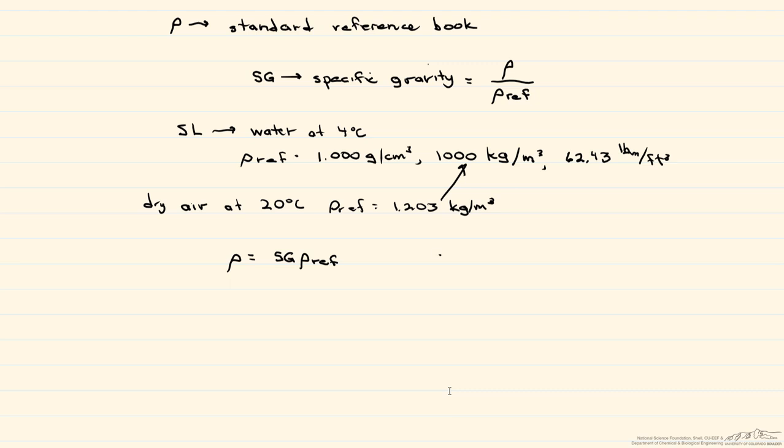For example, let's look at the specific gravity of mercury, and at 4 degrees C, it's equal to 13.6, and remember, that is unitless. So if we want to find the density of mercury in grams per centimeter cubed at 4 degrees C, we just multiply 13.6 times the reference density. And again, I'm using this one because we want it in grams per centimeter cubed. And we find that the density is 13.6 grams per centimeter cubed.